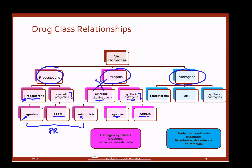With androgens, we actually have two physiological hormones: testosterone and DHT, which is dihydrotestosterone. Androgens are all male sex hormones, and both testosterone and DHT are androgens. They work at the same receptor — the androgen receptor. So all progestogens act at the progesterone receptor, all estrogens act at the estrogen receptor, and all androgens act at the androgen receptor.